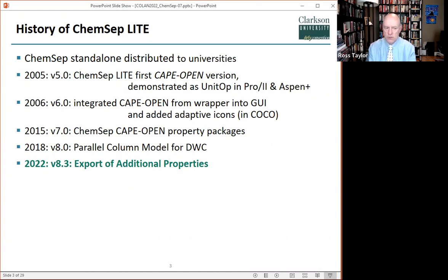This version was tested with commercial flow sheeting software. We have continued developing ChemSat to this day. This resulted in many new developments, such as adaptive icons, our own property package including one for electrolytes, and unit operations not offered by commercial suppliers, such as a single unit dividing wall column model. Now we are adding the export of additional properties.